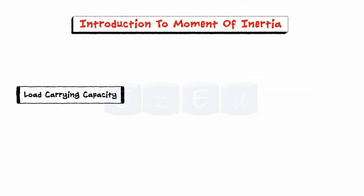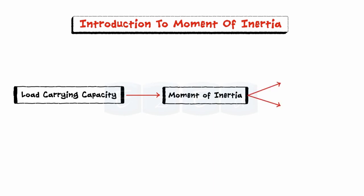The load carrying capacity of a member depends upon its moment of inertia. Thus, the moment of inertia of a body plays an important role in deciding the orientation of cross-section to bear the appropriate loads.